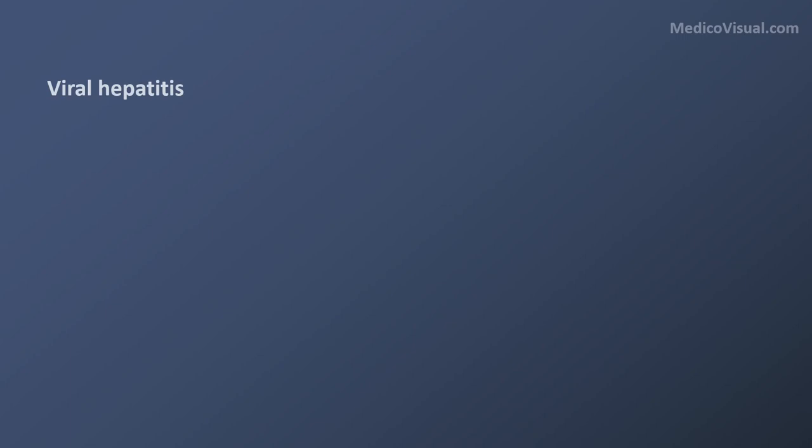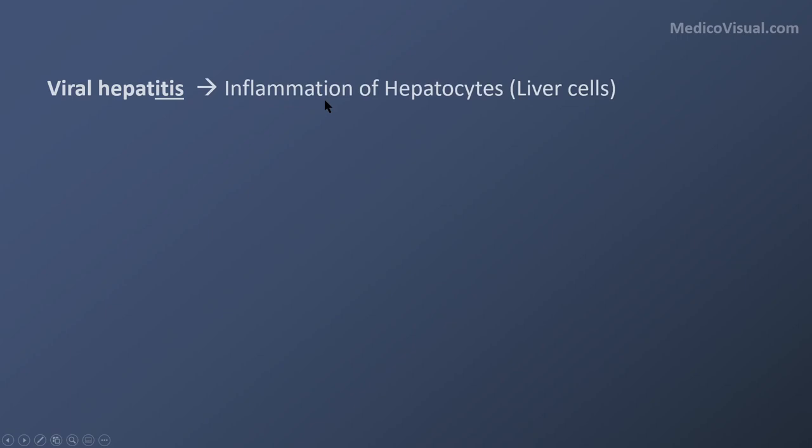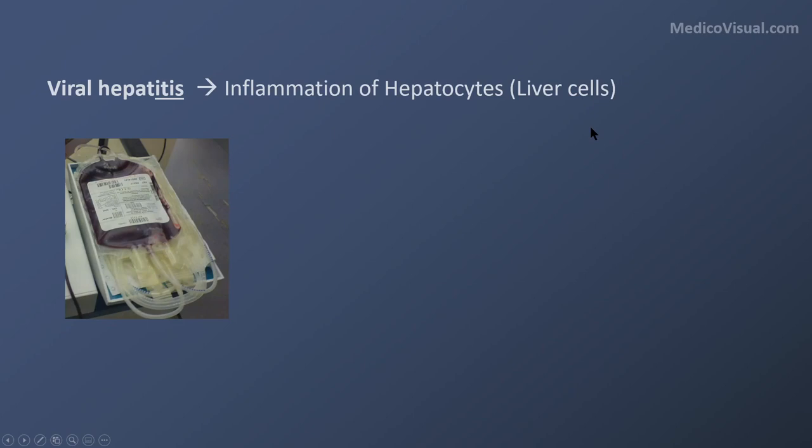Hepatitis B Virus is the major cause of viral hepatitis. The suffix '-itis' wherever it appears means inflammation. So viral hepatitis means inflammation of hepatocytes, and hepatocytes are liver cells.